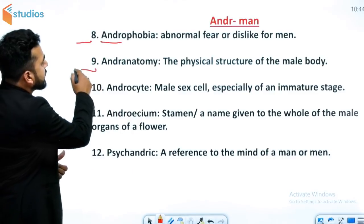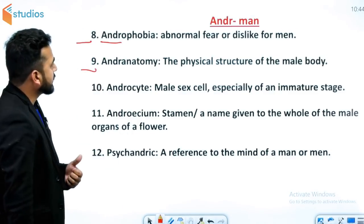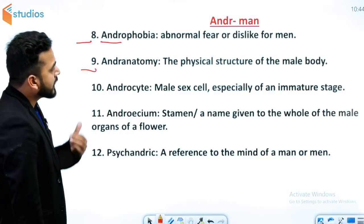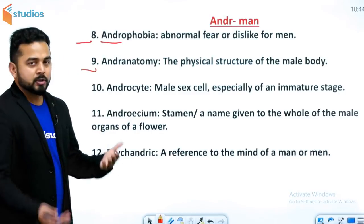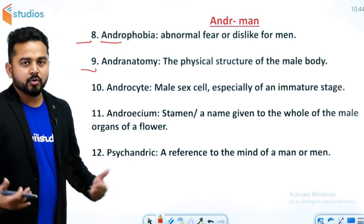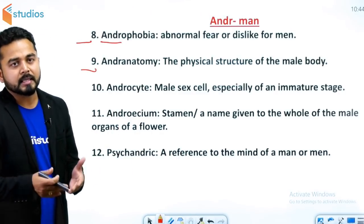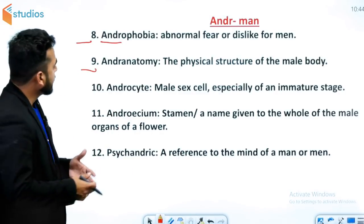अगला word है andronatomy. Andronatomy means the physical structure of the male body — जो male की body होती है, उसका जो physical structure होता है, उसे andronatomy कहते हैं।